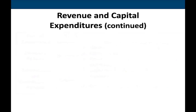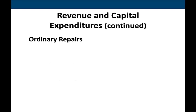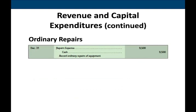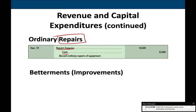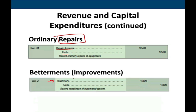Let's look at actual journal entries. If we spend $9,500 on ordinary maintenance in our manufacturing facility, we debit repair expense and credit cash, because those repairs are necessary to keep equipment in working condition. If we spend $1,800 to improve a machine by adding a new unit that increases its life and capacity, we debit machinery — not an expense — and credit cash.